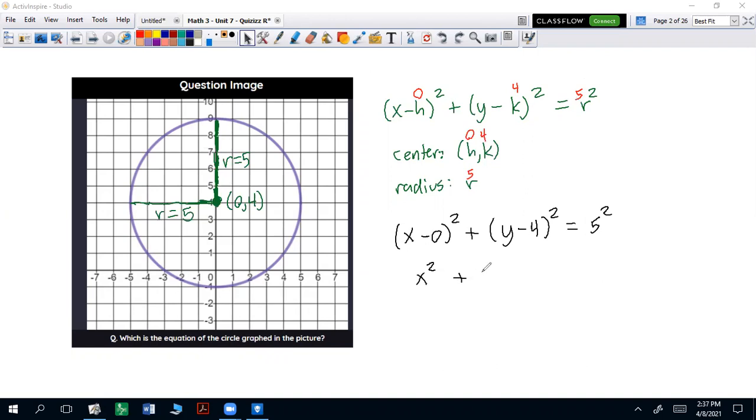Now we're going to keep (y-4) as (y-4), but the 5² becomes 25. So that would be your simplified equation of a circle in standard form.